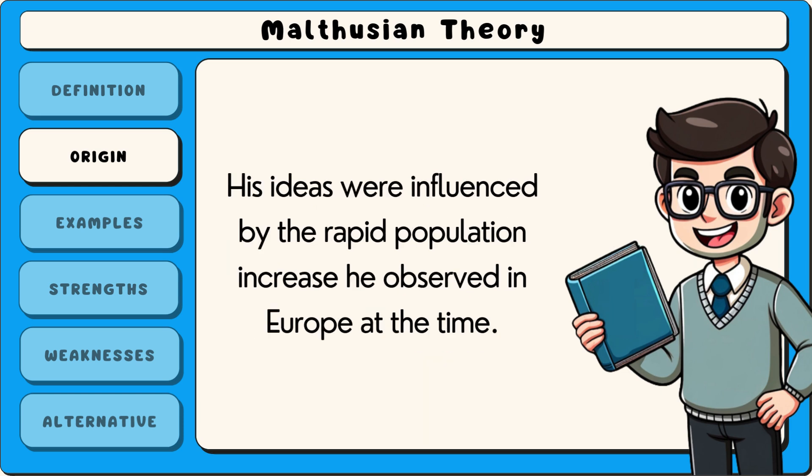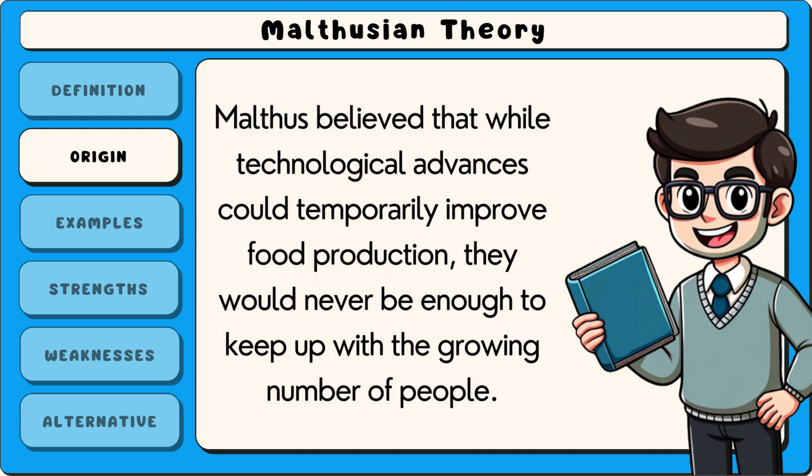His ideas were influenced by the rapid population increase he observed in Europe at the time. Malthus believed that while technological advances could temporarily improve food production, they would never be enough to keep up with the growing number of people.